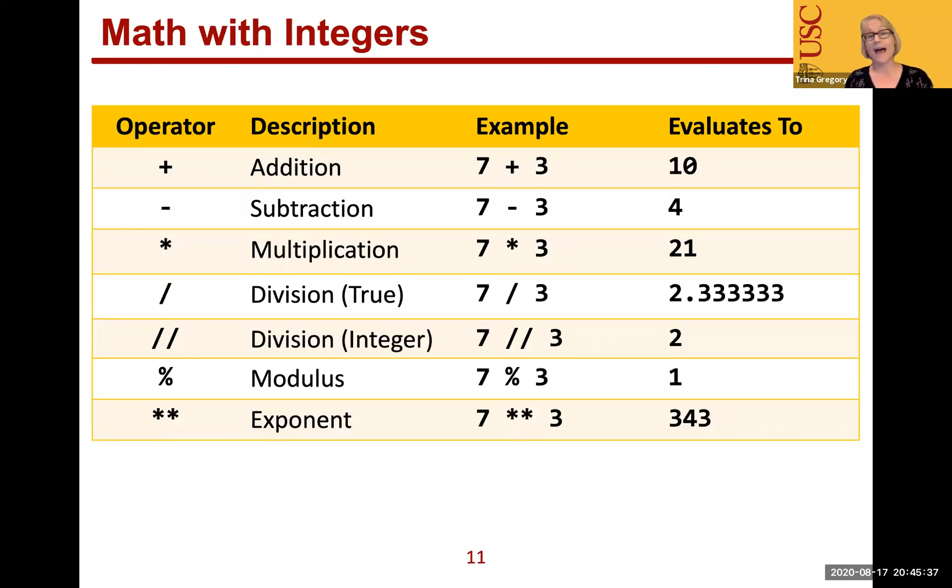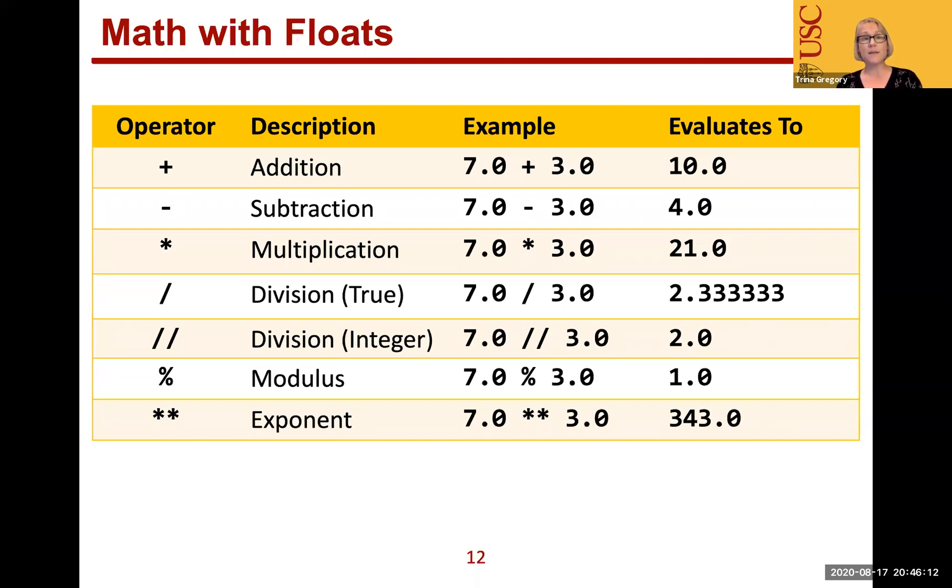So here's just some examples of math with integers. You could see a whole example of using addition, subtraction. You'll notice if both of them are integers, it generally gives us an integer except for true division. True division will always give us a float. Integer division, of course, will just give us an integer. Modulus will give us a 1. And we have the exponent, 7 to the power of 3. That's what that exponent is. So that's an example using integers. Here's the same examples using floats. Just so you can see that, in this case, we're always going to get floats back. So even if it's an even number, we're still going to have that 0.0 at the end. We're going to get a float.